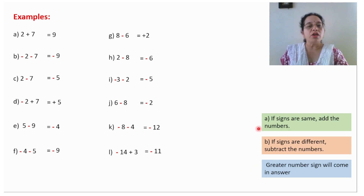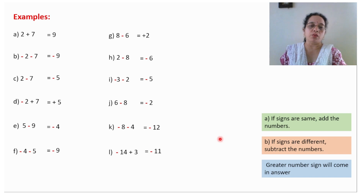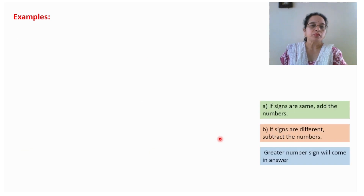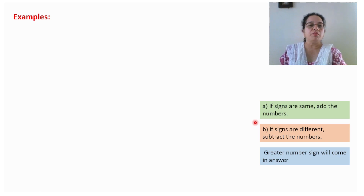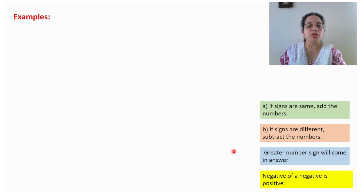Just recite whatever you are doing and then write down the answer the way I have done it. Again: signs are same, add the number; signs are different, subtract the number; greater number sign will come in the answer. I am reciting this many times so that you can also recite in the same rhythm. And one more thing: negative of a negative is positive — that is also very important.